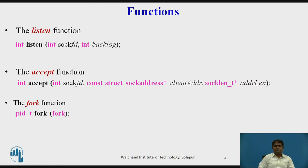The fork function is used by a process to duplicate a process. The process that calls the fork function is referred to as a parent process, and the duplicate created is called the child process. It is interesting that the fork function is called once but it returns twice. In the parent process the return value is a positive integer; in the child process the return value is zero. If there is an error, the fork function returns minus one. After the fork, two processes are running concurrently and the CPU gives running time to each process alternatively.